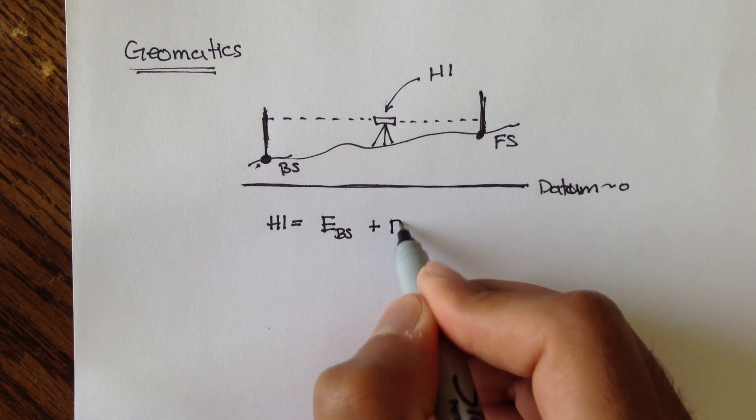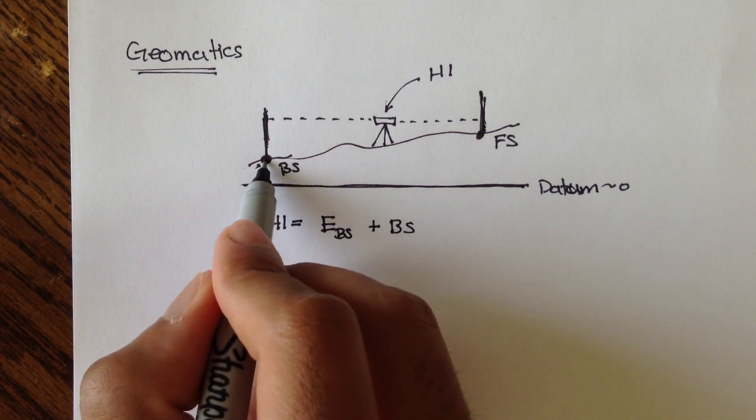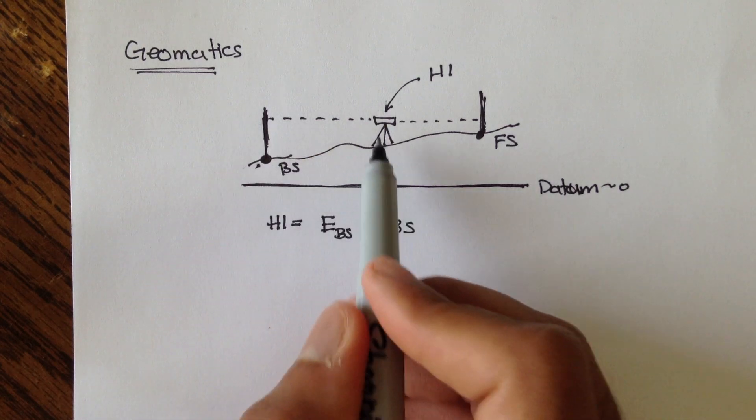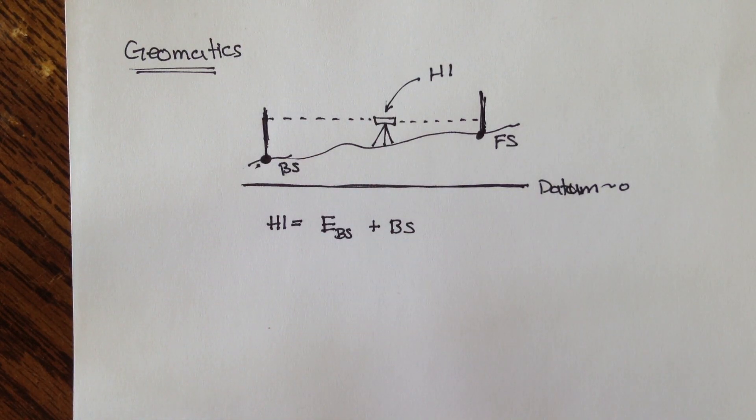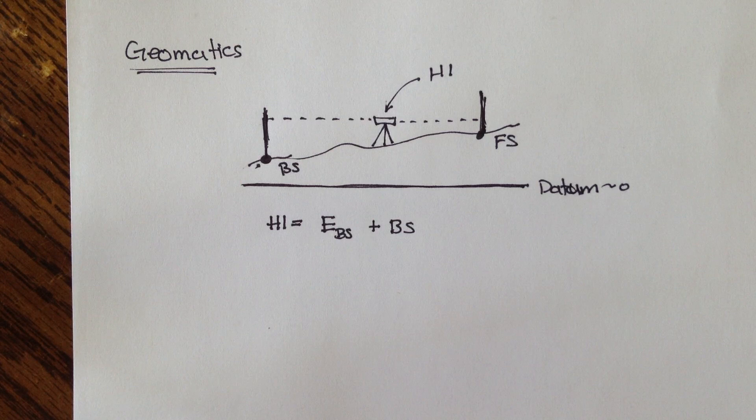Plus the backsight reading, so whatever you measured on the rod. So the elevation of this point, plus the backsight reading, which is this, would give you the height of this instrument. From there, you can continue on to measure out the foresight, figure out what the elevation of this point was, and keep going. So that was just a quick review of differential leveling.